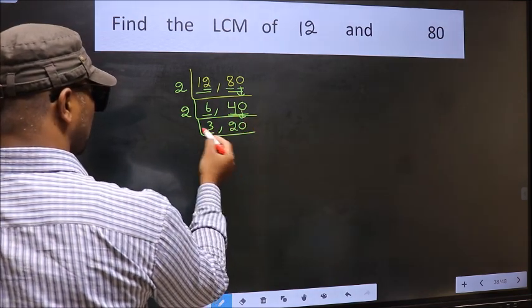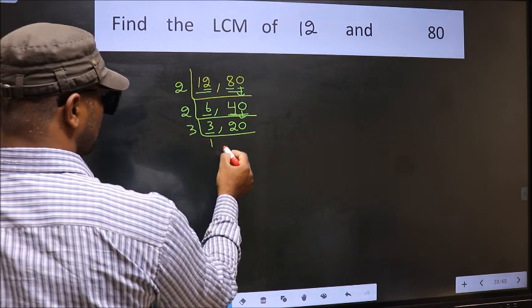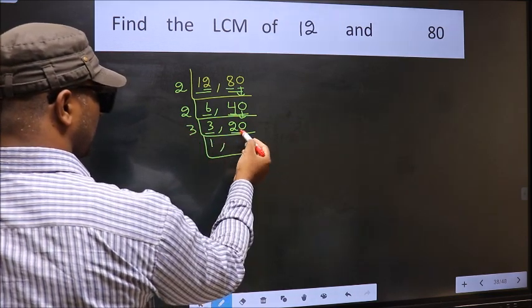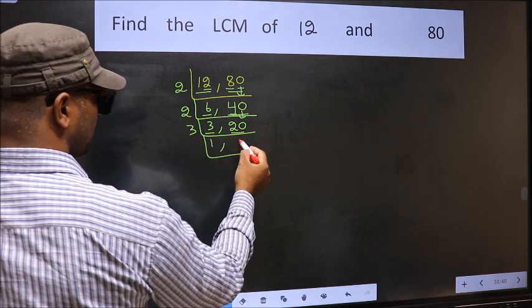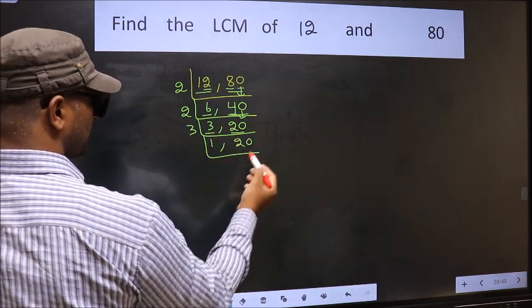Now, here we have 3. 3 is a prime number. So, 3, 1 is 3. The other number 20, not divisible by 3. So, we write it down as it is.